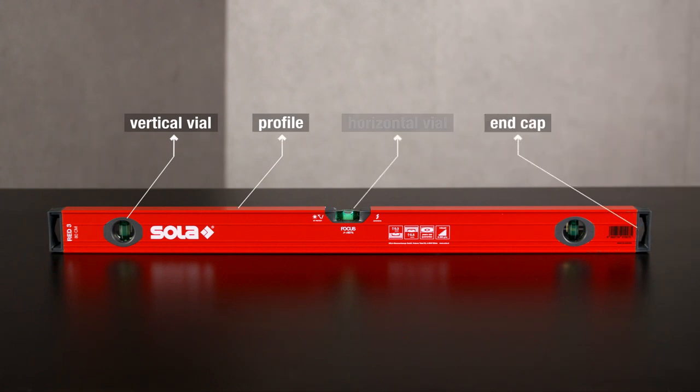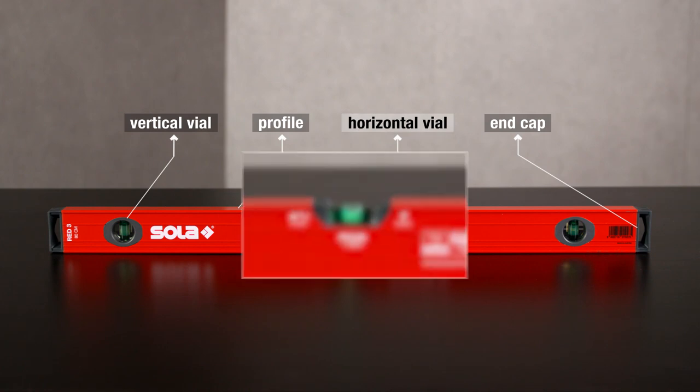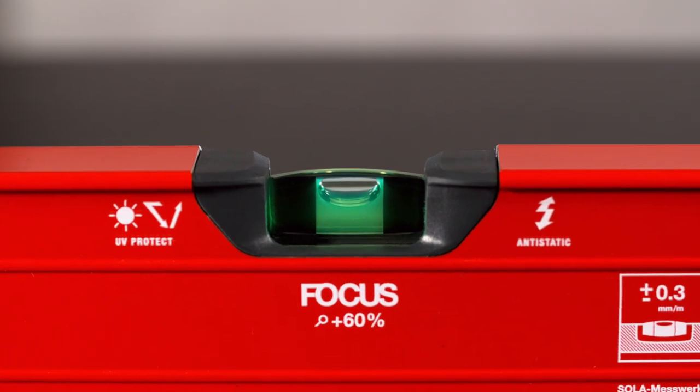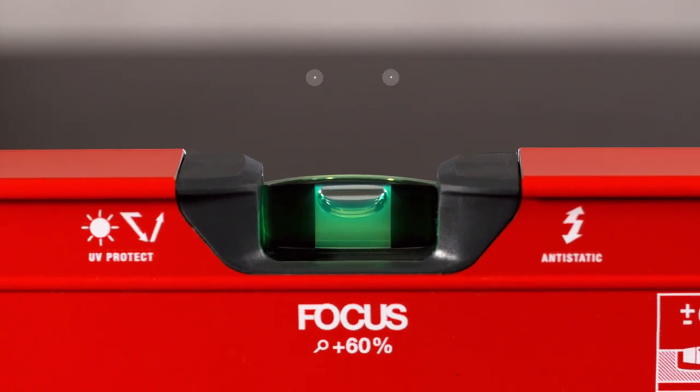The most important element is the vial, crucial for precision, handling and longevity. Important when measuring is the position of the air bubble, exactly in the middle between both markings.